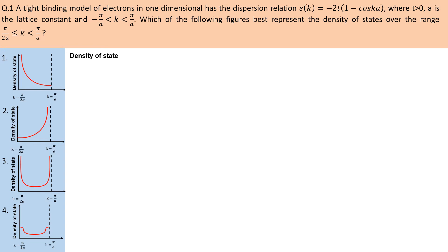Density of states per unit energy represents the number of particles. This relation is in wave vector k form. The density of states relation involves dk/dE, whose value can be found from the dispersion relation. However, the value of dn/dk is not immediately obvious.